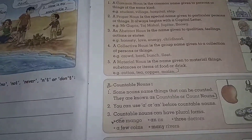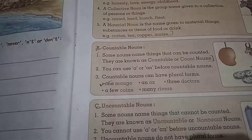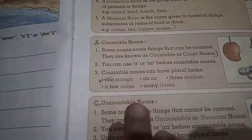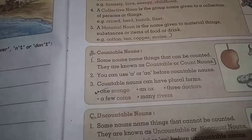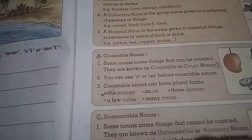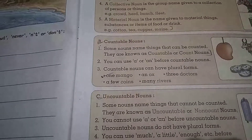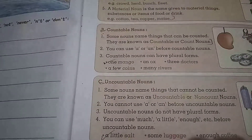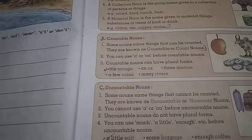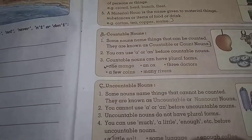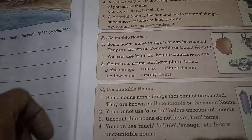Again, nouns are also divided into countable nouns and uncountable nouns. Countable nouns are those which we can count — for example, mangoes, coins, three doctors, one ox, few coins. Uncountable nouns are things which we can't count — like sugar, rice — it is very difficult to count. We will learn these things more deeply in the next lecture about countable and uncountable nouns.